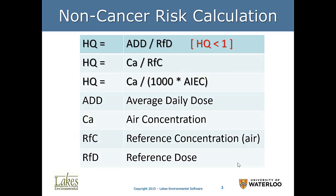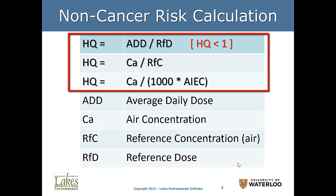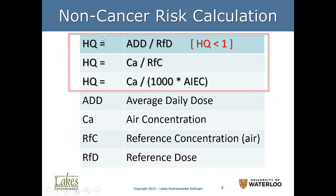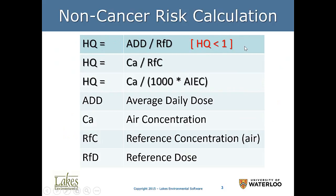Let's start with the non-cancer. We compute non-cancer risk based on the hazard quotient, and we can compute them in three manners, as you see here. The hazard quotient must be related to a factor such that if you are above that factor, there is a severe health effect, and if you are below, not as much. Because there are so many chemicals, we cannot add all the hazardous effects to the total body — we need to be organ-specific.